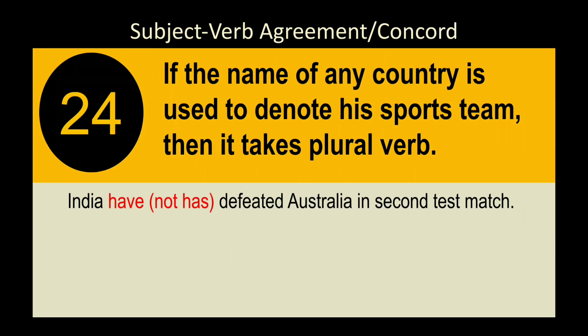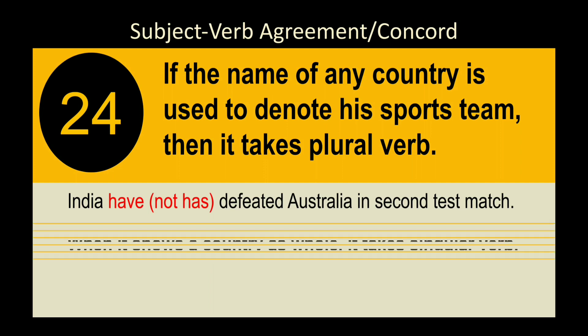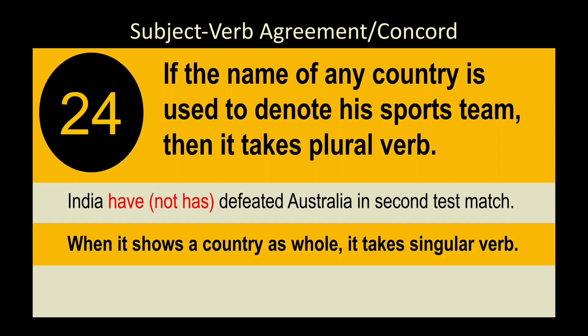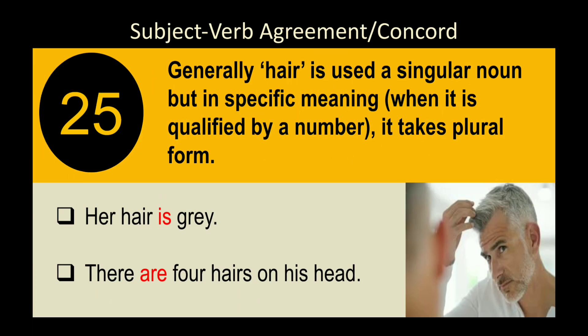Rule 26: If the name of a country is used to denote its sports team, it takes a plural verb. 'India have defeated Australia in the second test match' — 'India' here means the Indian cricket team. But if 'India' is used as a geographical or political unit, it takes a singular verb: 'India is a great country.'